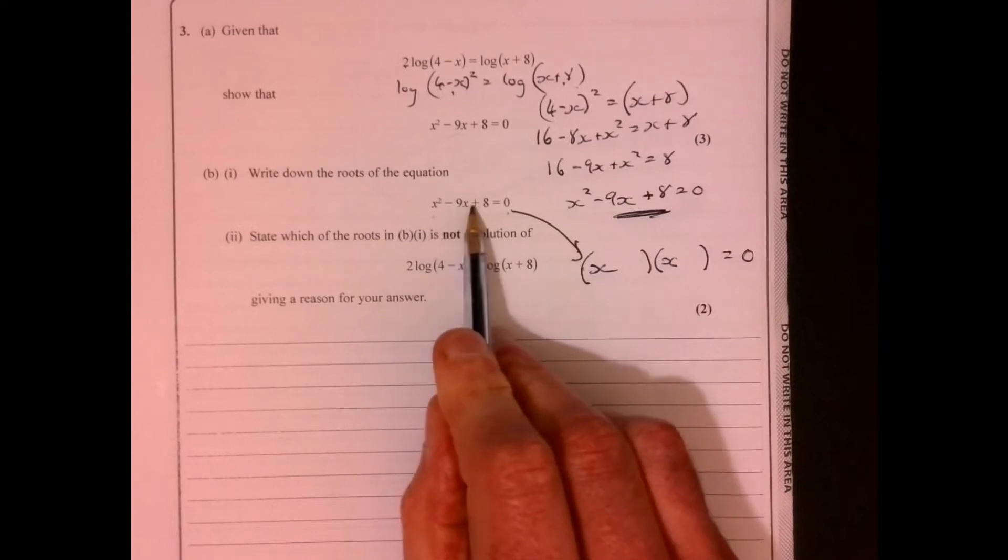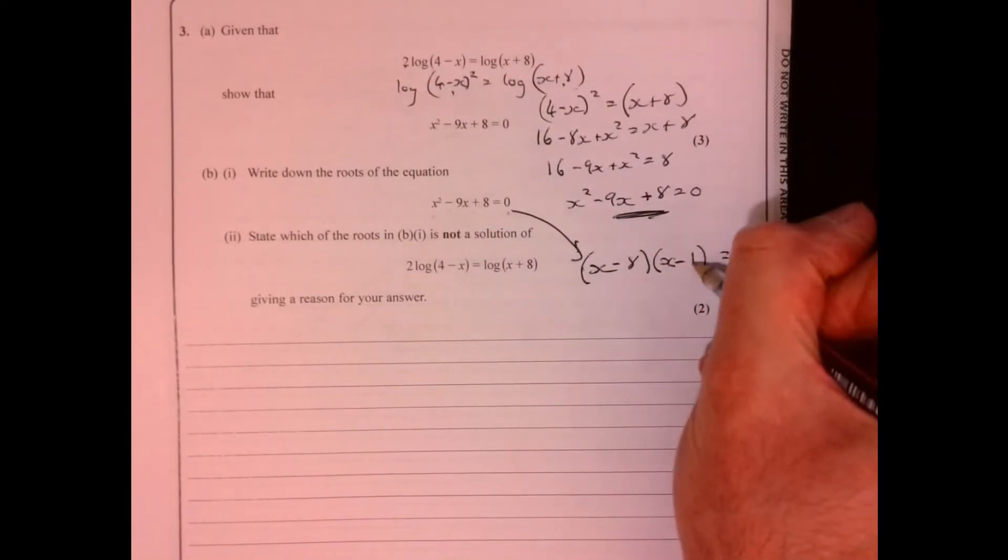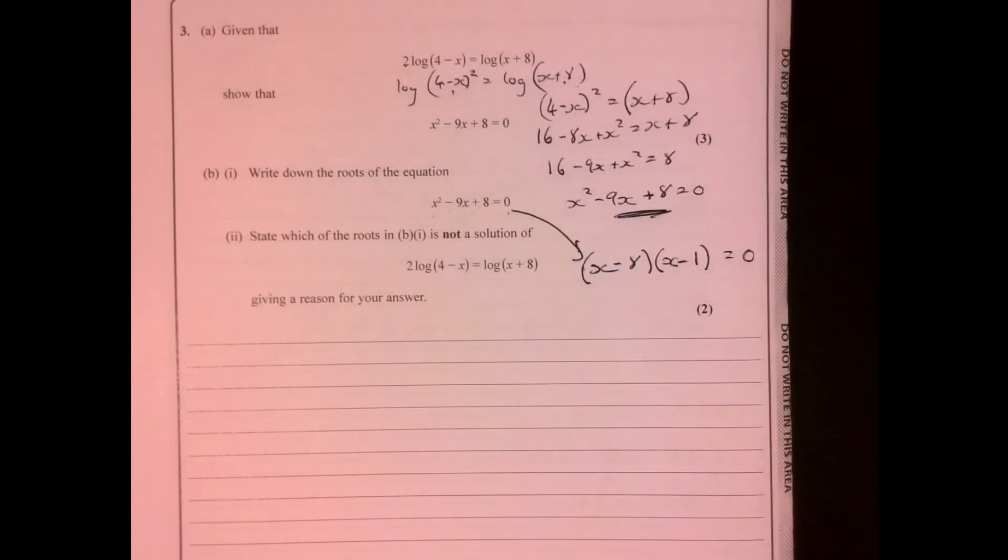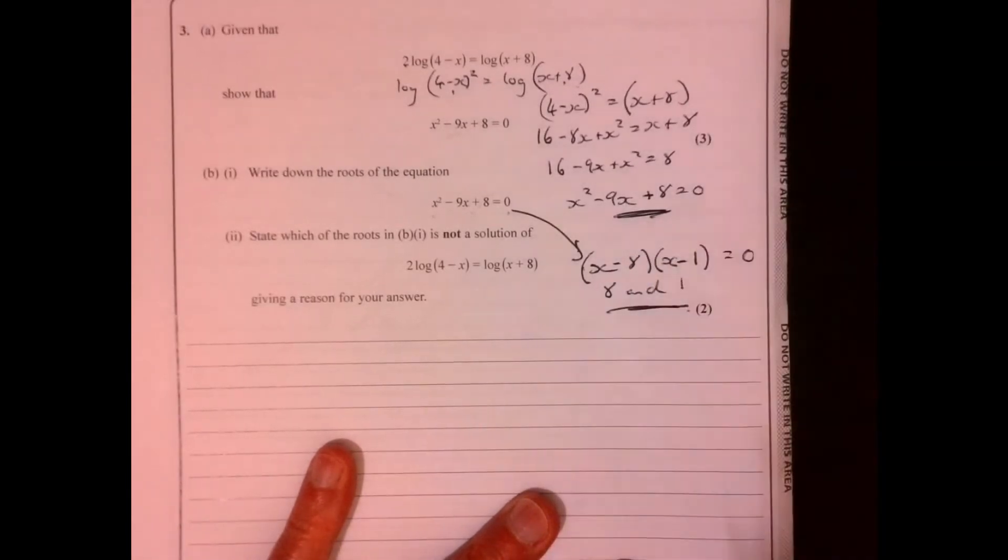So we've got two negatives, haven't we? So it's got to be minus 8 and minus 1. So therefore, if we solve that, x could equal 8 and it could equal 1.